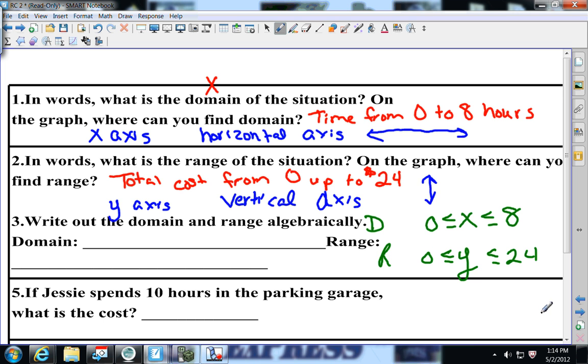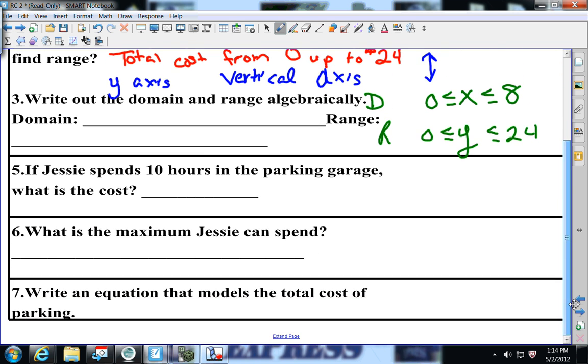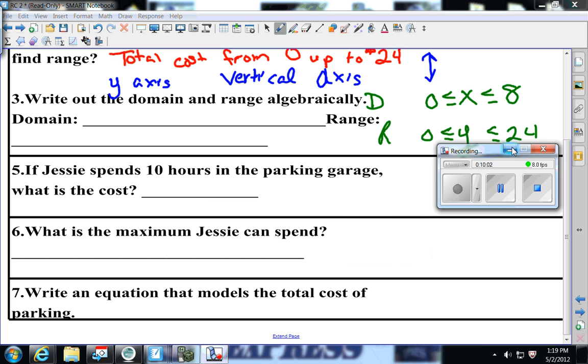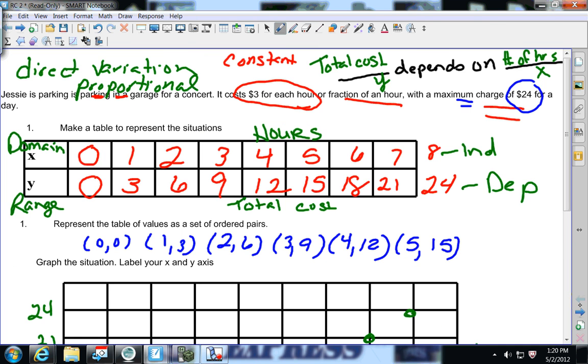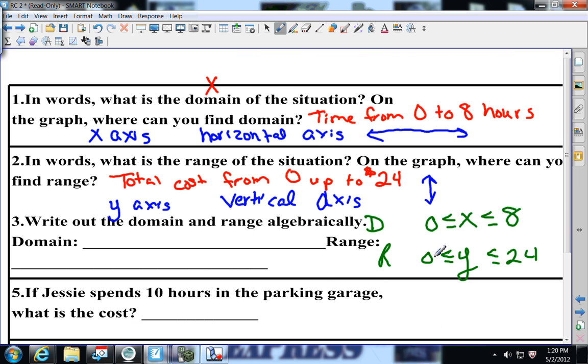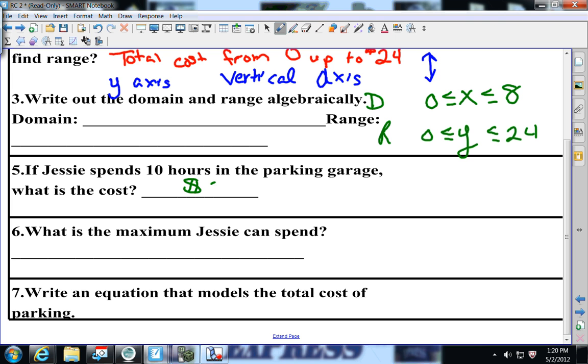I want you to think about these next two problems. If Jesse spends 10 hours in a parking garage, well, 10 hours is out here. It goes past, what's the most you spend in a day? $24. So it doesn't matter how many hours you spend after eight, it's still $24. The maximum she spends is $24. To write the equation, we have Y equals 3X, because we're multiplying three times each hour. That's your equation. When you apply it in the real world to this problem, it doesn't go anywhere higher than 24.